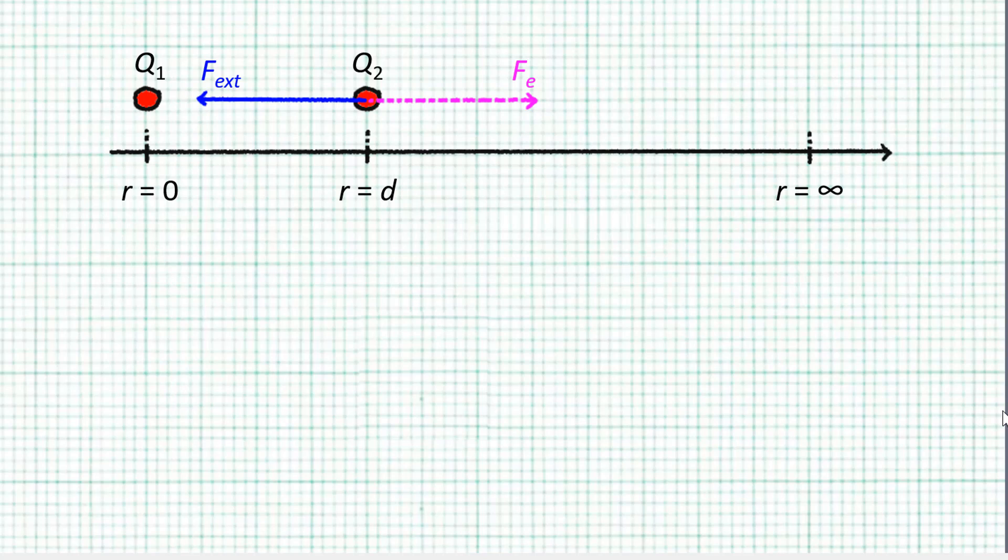This leftward force is called the external force. Since the magnitude of the electric repulsion is not constant, the required external force is also not constant.